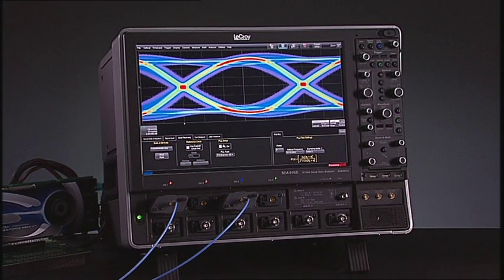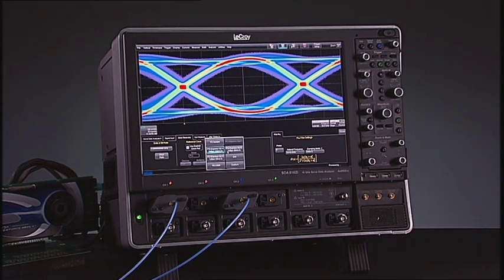The most common way of viewing a serial data signal is by its eye pattern, shown here for a 5 gigabit per second PCI Express Generation 2 signal. The eye pattern is computed on a continuous acquisition of the signal using up to 512 million samples.